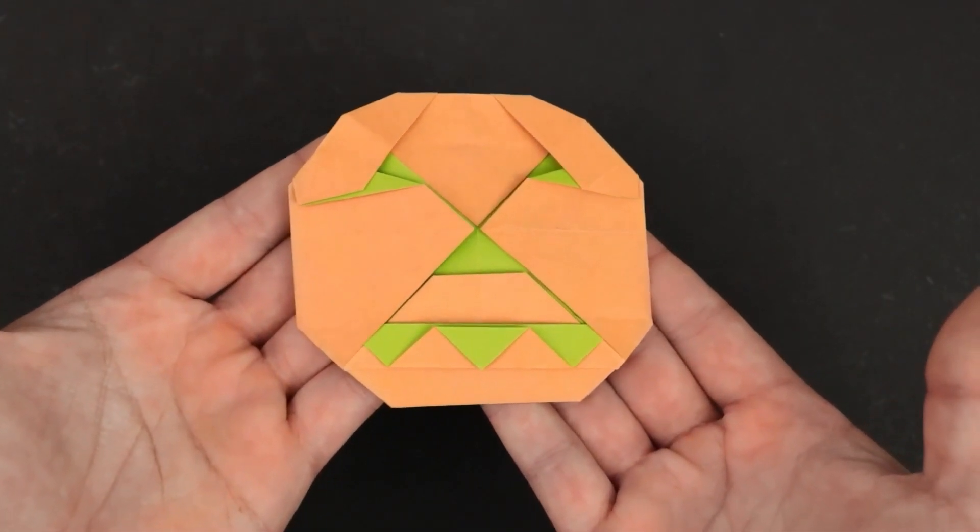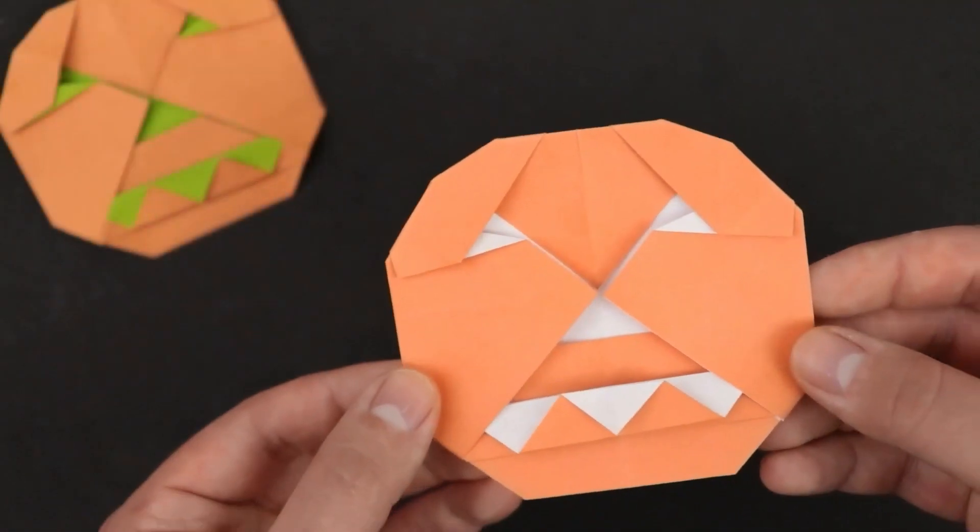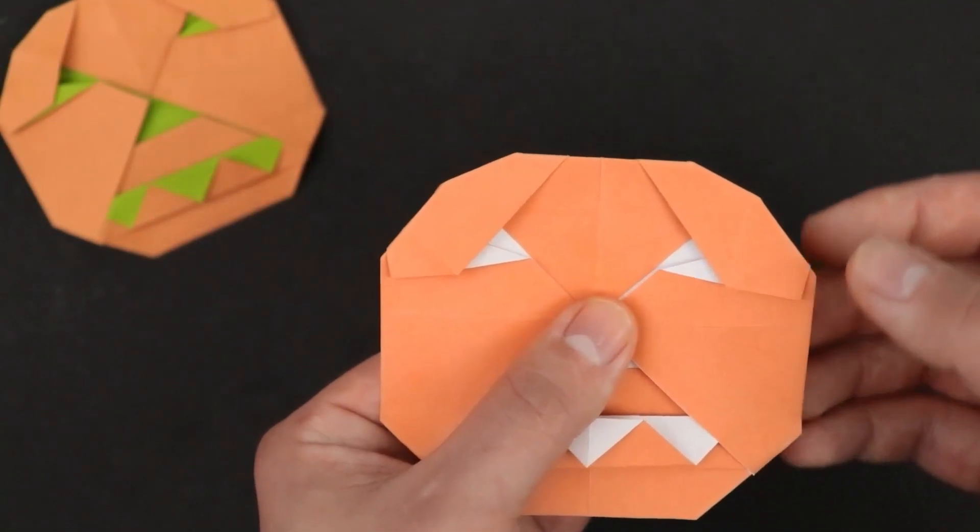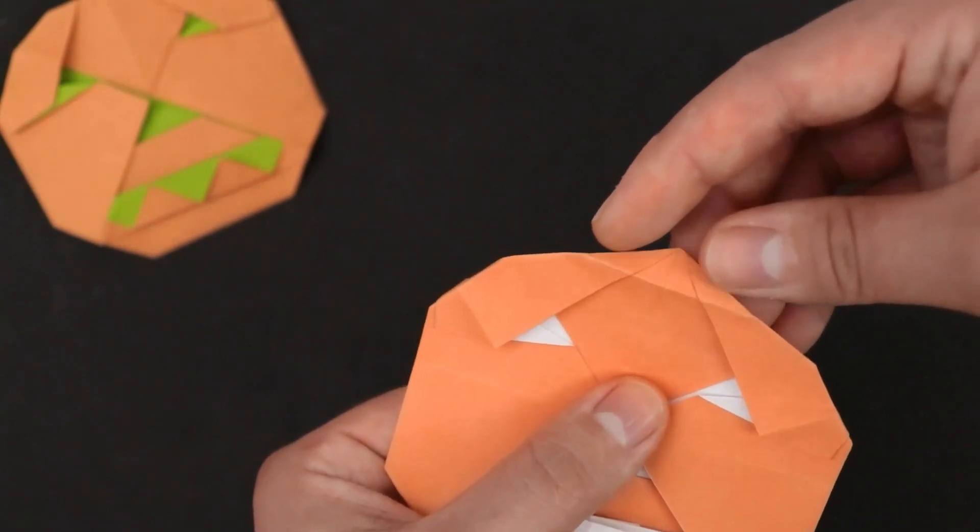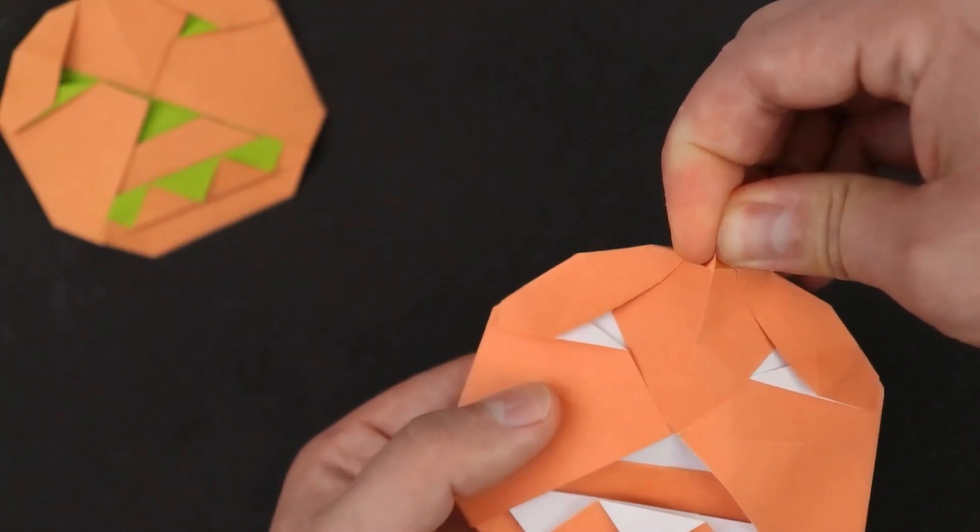You can stop here if you want or you can create a little more detail by unfolding the corner up here and pinching the paper to create a sort of a stalk.